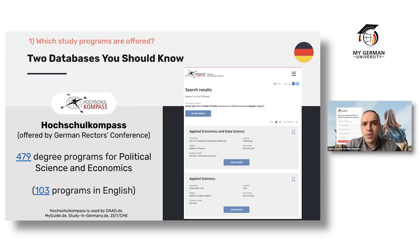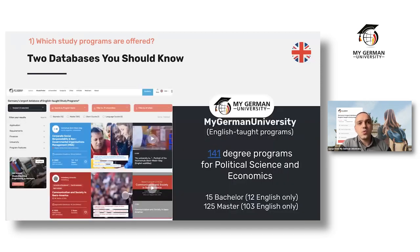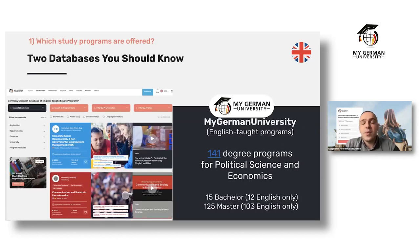For those interested in German-taught programs, check out Hochschulkompass. For English-taught programs — which I assume most of you are looking for — MyGermanUniversity is your go-to. We have over 140 degree programs in political science and economics listed, at both bachelor and master level, mostly in English only.